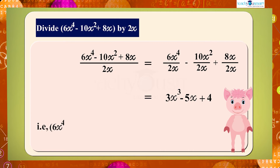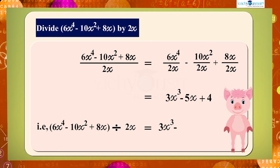That is, 6x raised to 4 minus 10x squared plus 8x divided by 2x equals 3x cubed minus 5x plus 4.